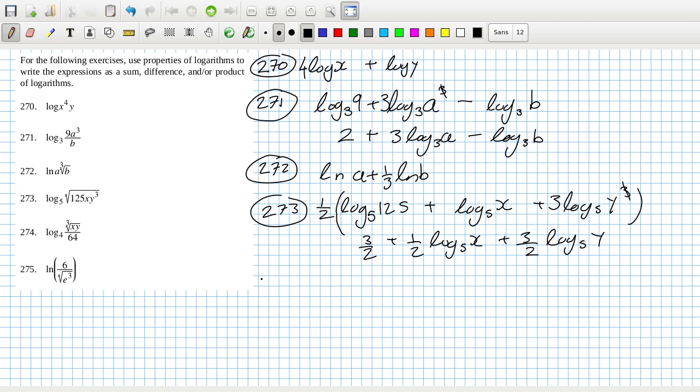274, so that's log four xy and xy third minus log four 64. Well, the third comes down in front.